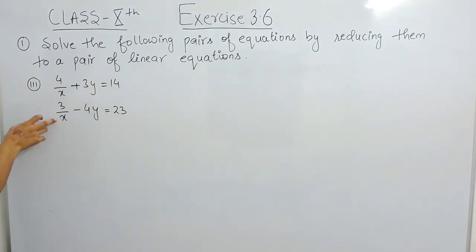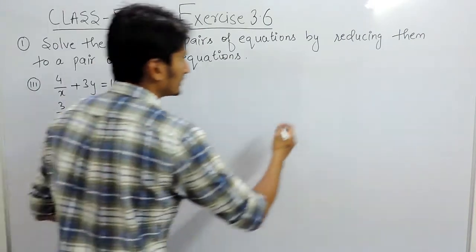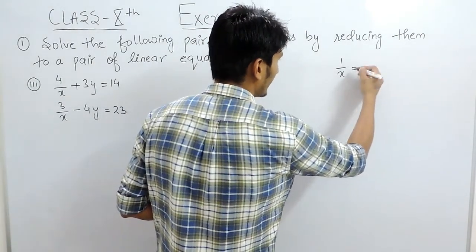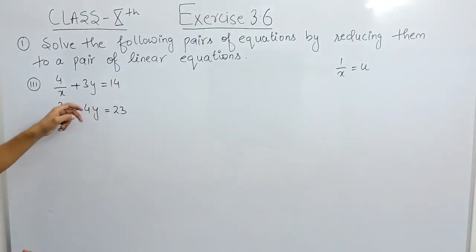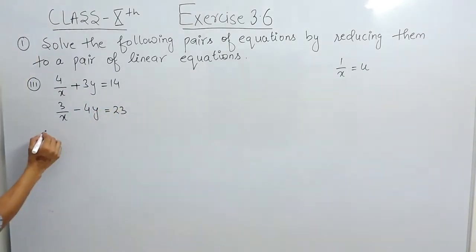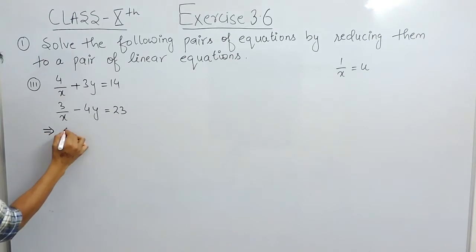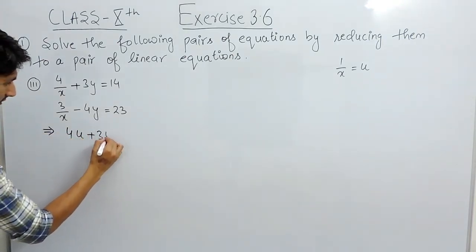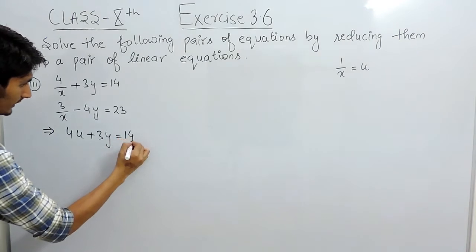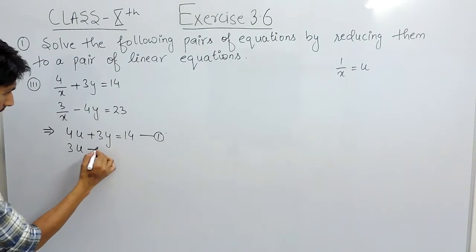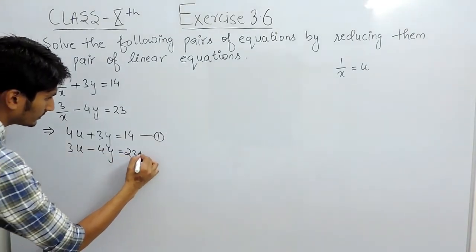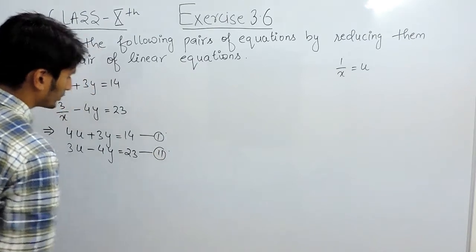You have to change the variable which is in the denominator to the numerator. Suppose 1 upon x has variable u, and y is already in the numerator so there is no need to change it. So our new equation will become 4u plus 3y equals to 40. This is our first equation, and the second equation will become 3u minus 4y equals to 23.